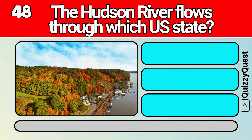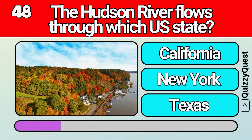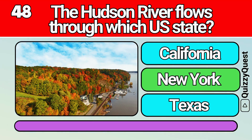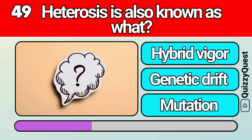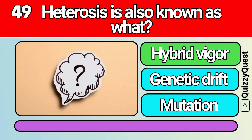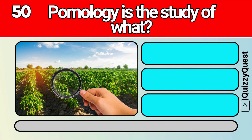The Hudson River flows through which U.S. state? Heterosis is also known as what? Pomology is the study of what?